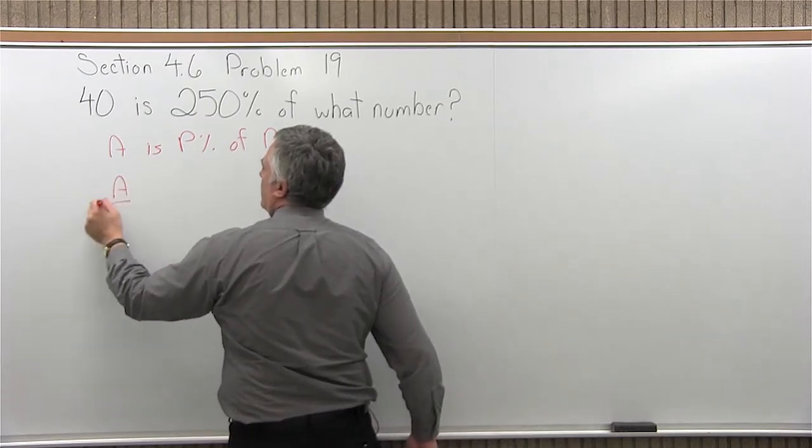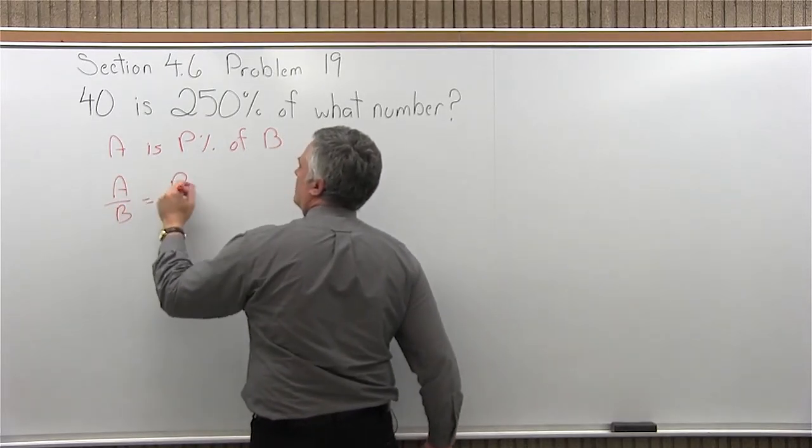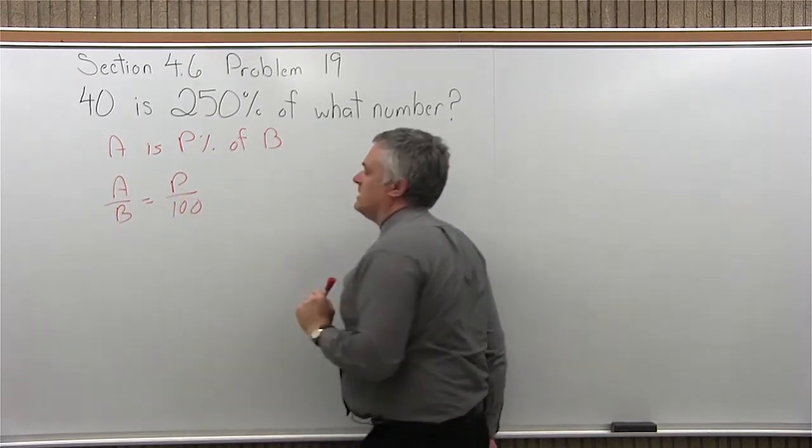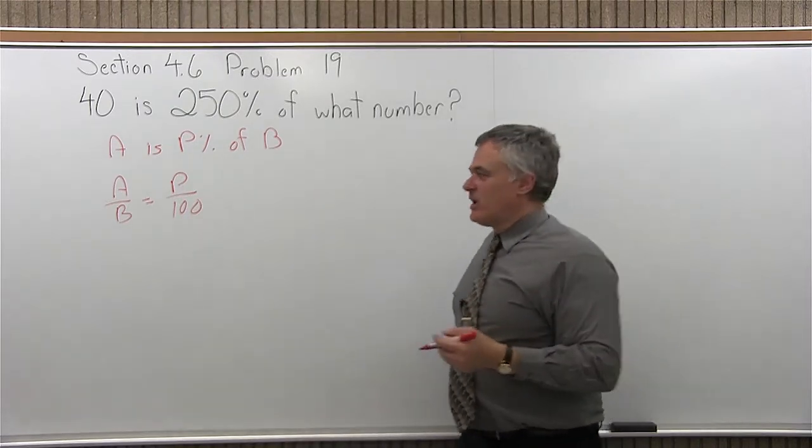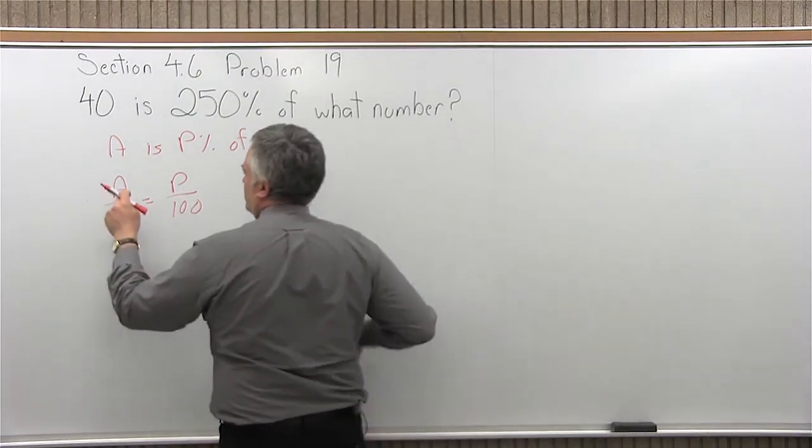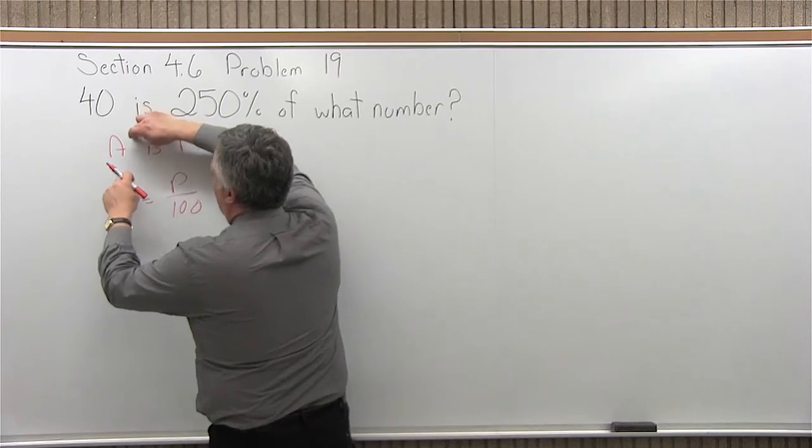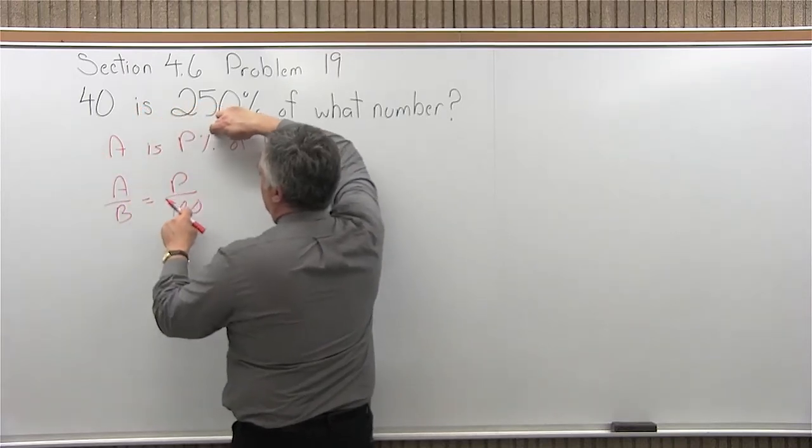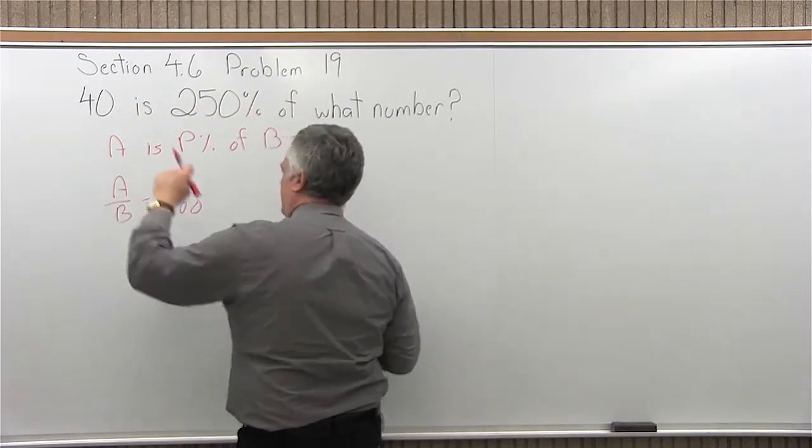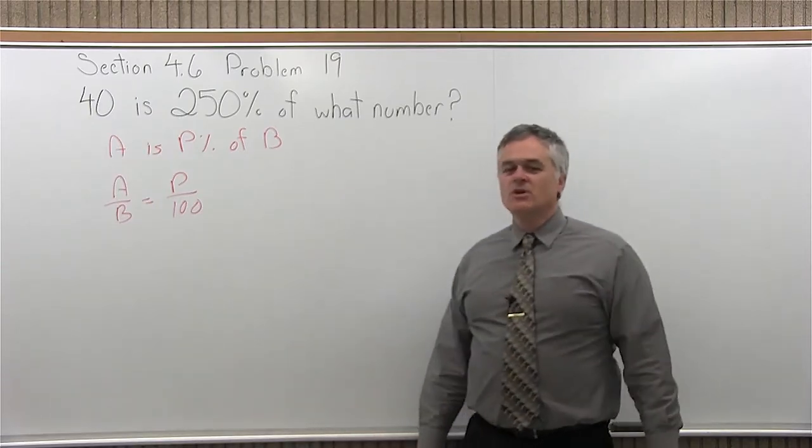Now that we know we have it in that form, we will use the formula A over B equals P over 100. And what I always say is you fill it in just going around the circle. Start with the A. A is P percent of B. You just start with A, go around the circle, come back. It fills in pretty easily.